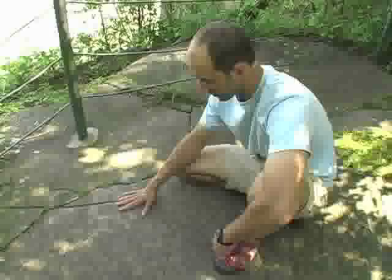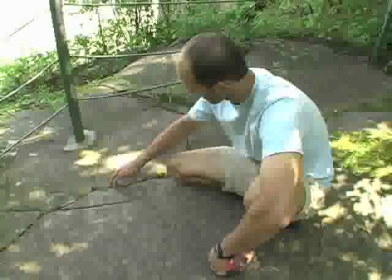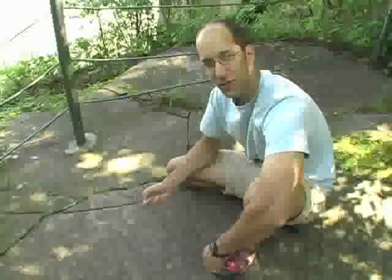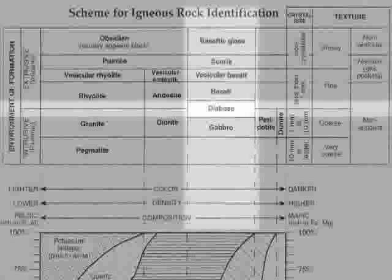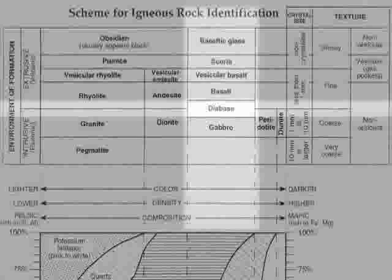Here we are at the Palisade Sill. Geologists tell me this is made of igneous rock, but what kind? The crystals are too small to see, but it's not glassy, and it feels dense. Crystals around one millimeter and dark in color — it must be diabase. So the Palisade Sill is made of diabase. Some igneous rocks have gas pockets, like this one. If it does, it's called vesicular.